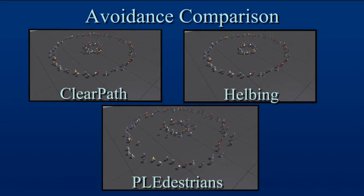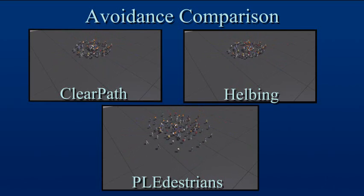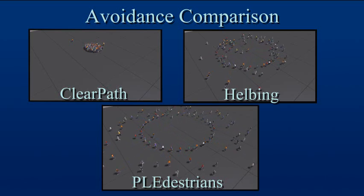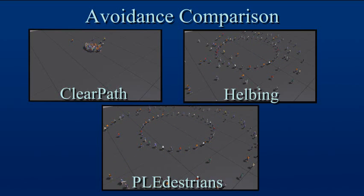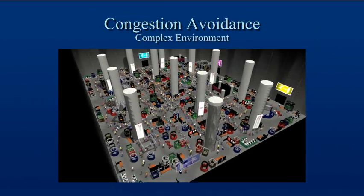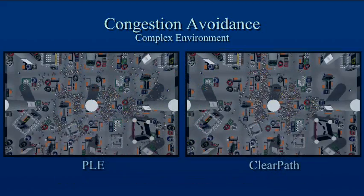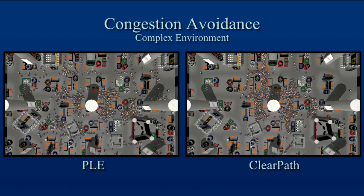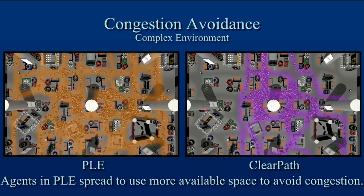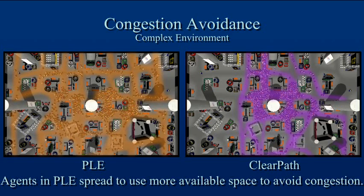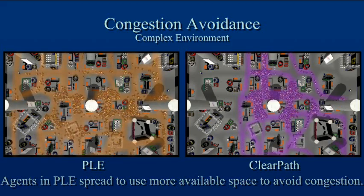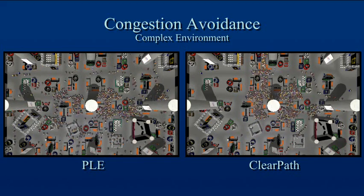Here we show congestion avoidance in an open environment. Because becoming stalled in congestion costs more energy than going around it, agents plan around congestion that they can see and are capable of avoiding. Other planning algorithms typically fail to achieve the same effect. Congestion avoidance should still occur in environments with many obstacles. In this scenario, each agent's goal is the exit farthest from its initial position, explicitly chosen to maximize potential congestion. In the PLE simulation on the left, agents plan new paths to better utilize available free space on the trade show floor to avoid developing congested regions. In the simulation without PLE on the right, agents head into the congestion developing along their shortest path.